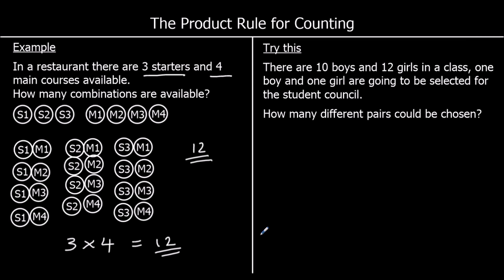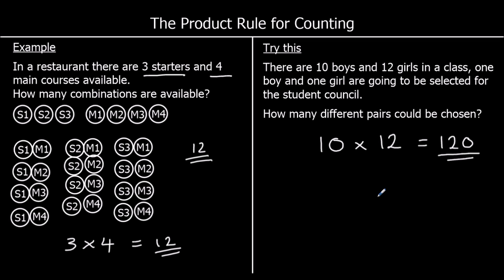We can use multiplication — the product rule — to add these up quickly. Here's a question for you to try: there are 10 boys and 12 girls in a class; one boy and one girl are going to be selected for the student council. How many different pairs could be chosen? There are 10 different boys, and for each of those 10 boys there are 12 different girls available, so 10 times 12 is 120 — there are 120 different pairs that could be chosen.